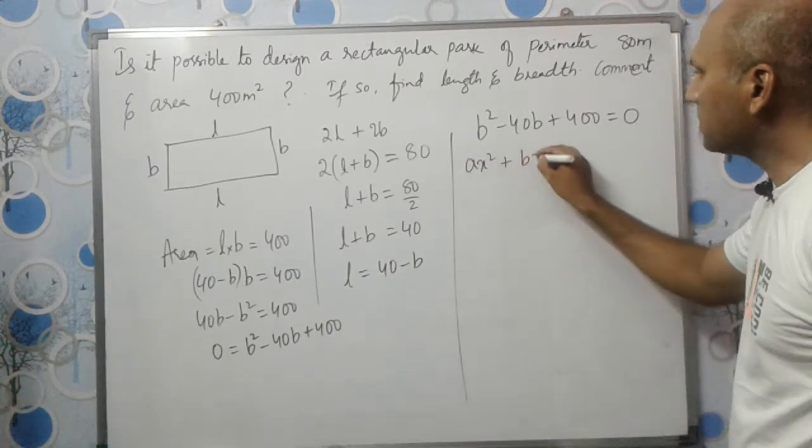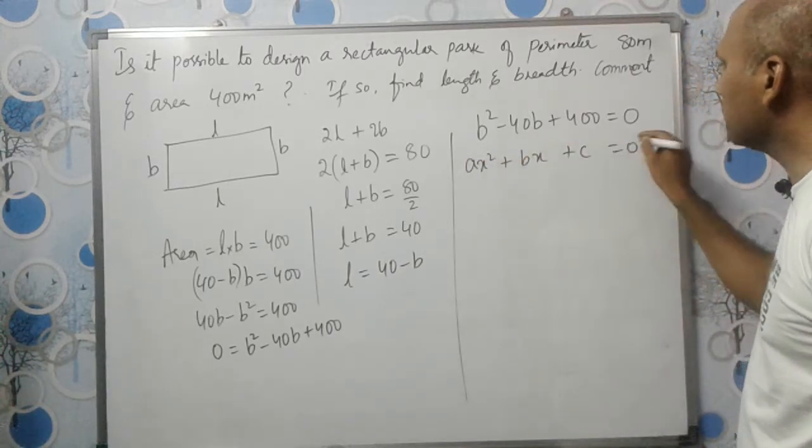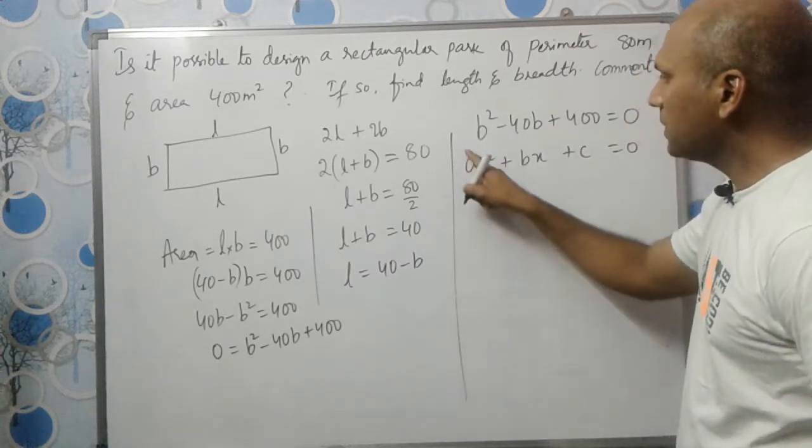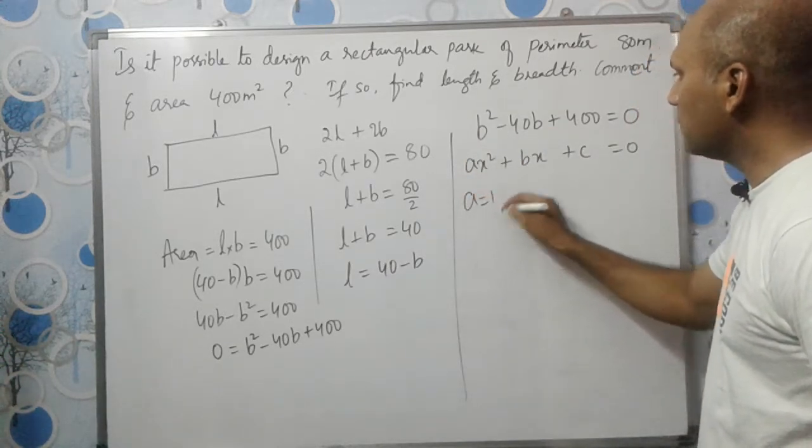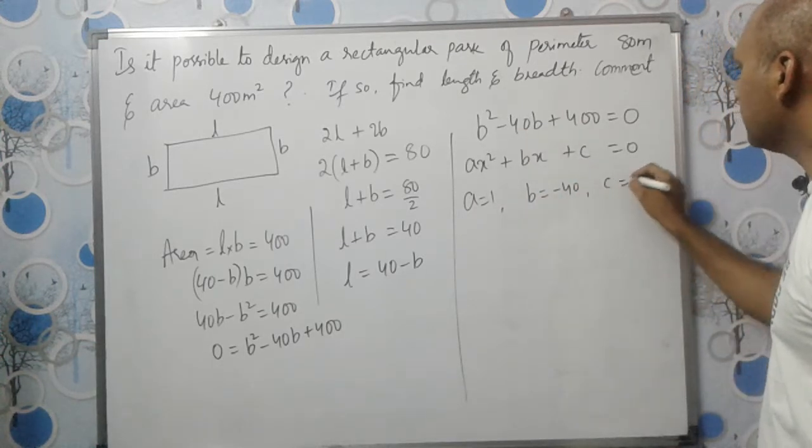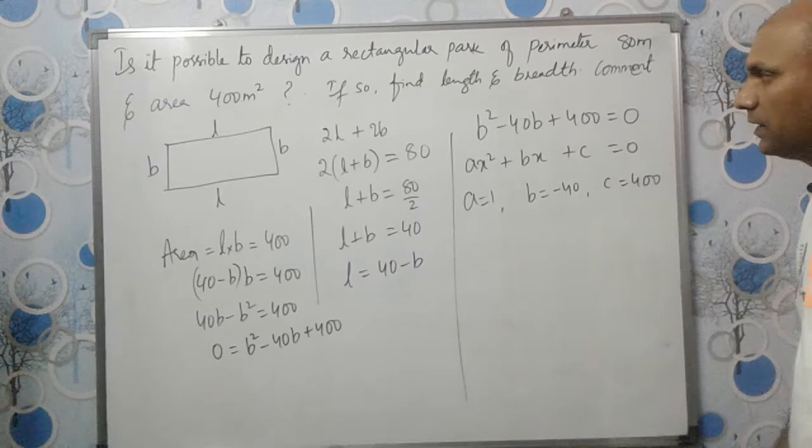If you compare this with standard form Ax²+Bx+C=0, in place of x we have B here, don't get confused. So A is 1, B equals -40, and C is 400.